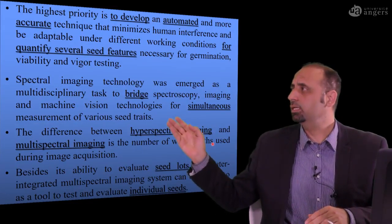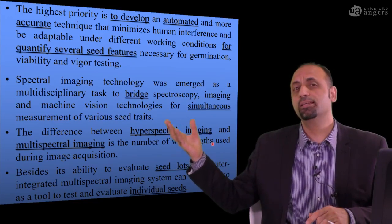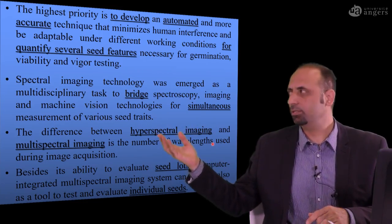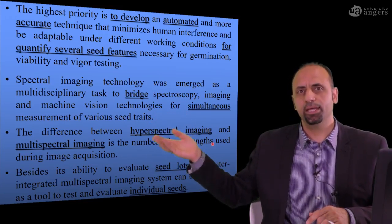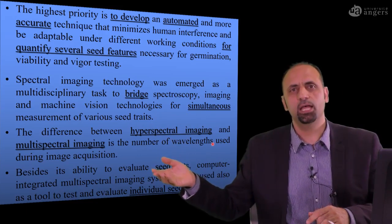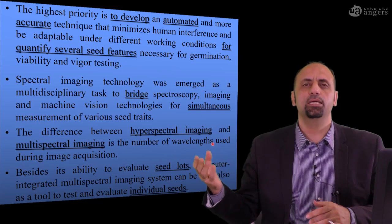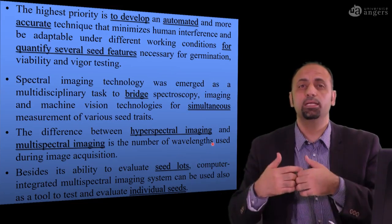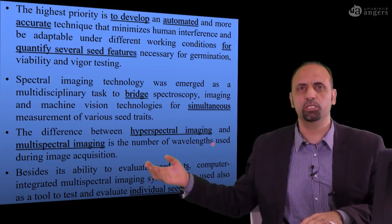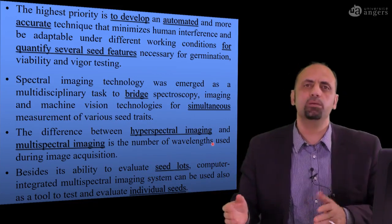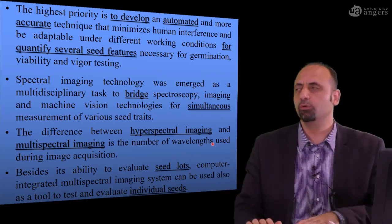To develop this kind of accurate and fast technique, you need to use spectral imaging. Why spectral imaging? Because it can bridge the two technologies, spectroscopy and imaging. Imaging to give you information about the dimensions, color, texture, all of these appearance of the seeds. In addition, you need to have spectroscopy, spectral information, because it gives you some information about internal structure, internal properties, like chemical composition of your seed.